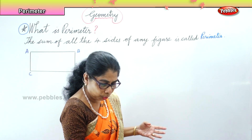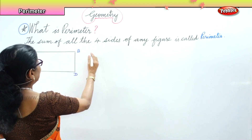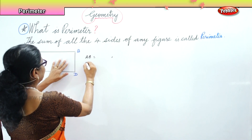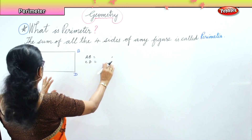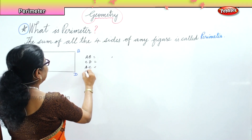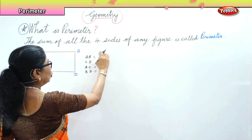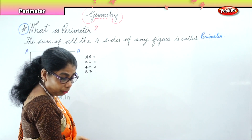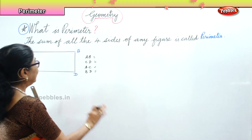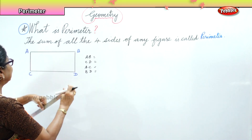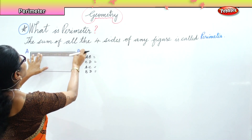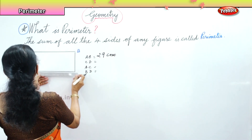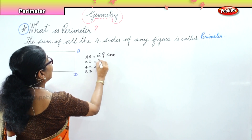I measure the sum of all the sides — that is A-B, then C-D, then A-C, and B-D. I need to measure all this — the sum of all the four sides. A-B is 29 centimeters, C-D is also 29 centimeters. B-D is 13 centimeters, and A-C is also 13 centimeters.